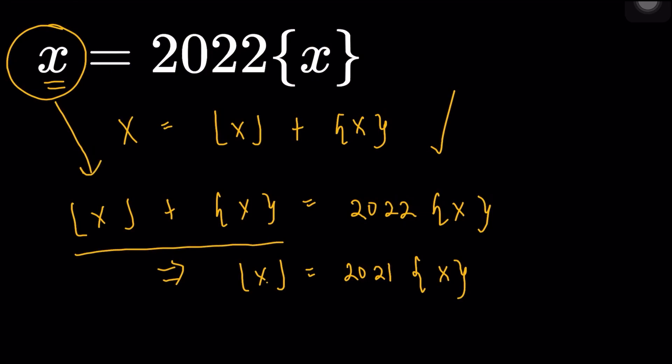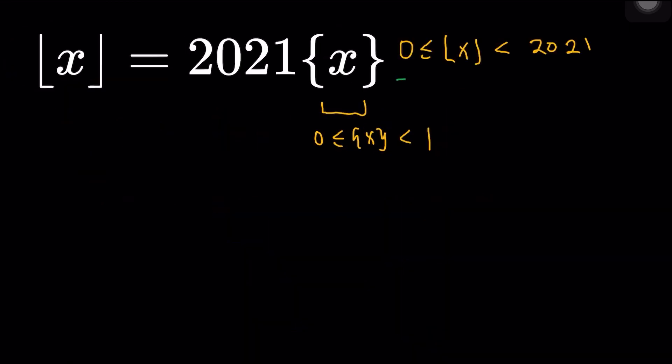Essentially, I'll be getting: floor(x) equals 2021 times the fractional part of x. Now we can do some bounding here, because there is a range of values for the fractional part of x. The fractional part of x must be greater than or equal to 0, and must be less than 1. The fractional part is 0 if x is an integer, and it can't exceed 1 since it is the decimal part.